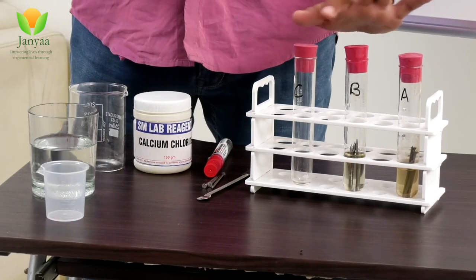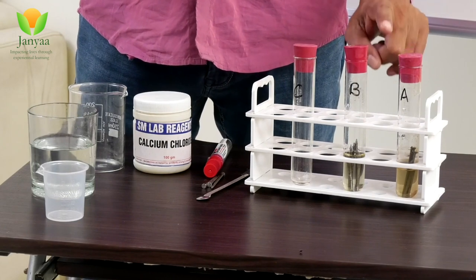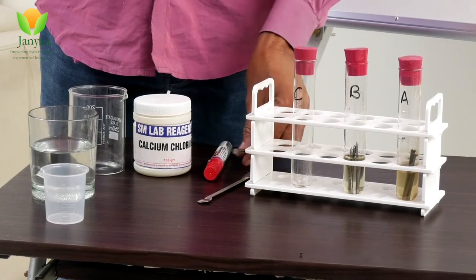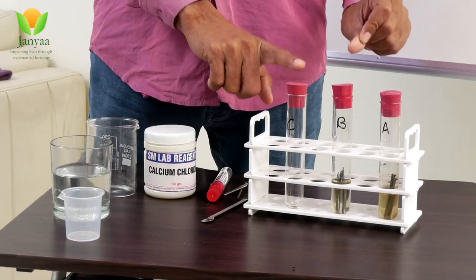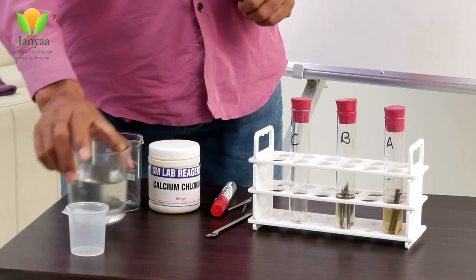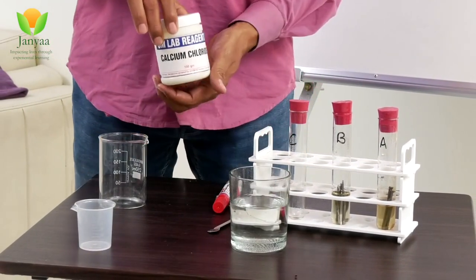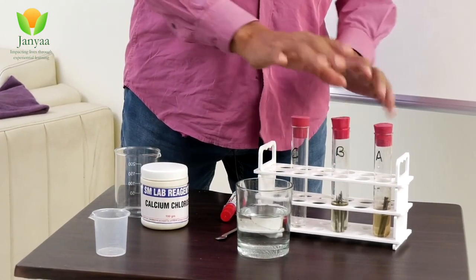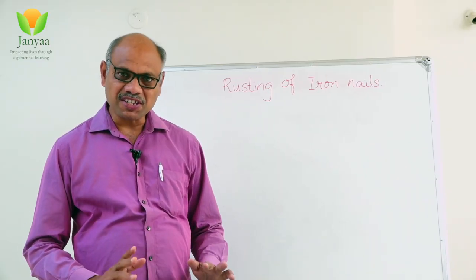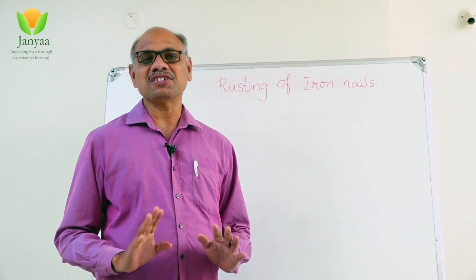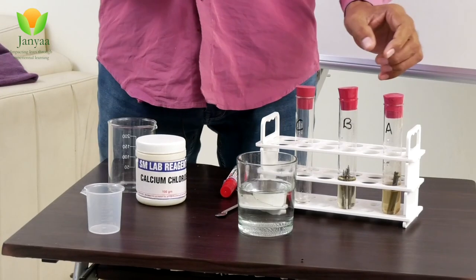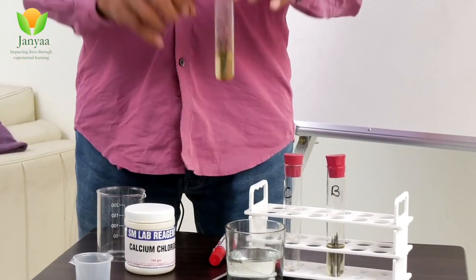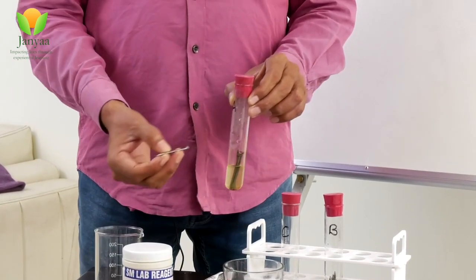Let us do a simple experiment. I have taken three test tubes marked A, B, and C, and some iron nails. We have used rubber corks, some water, anhydrous calcium chloride, and some oil. With these materials let us test at what condition iron gets rust.